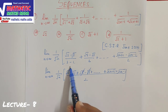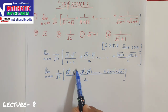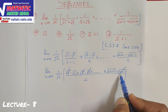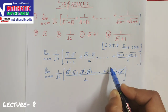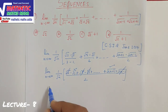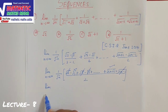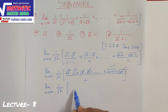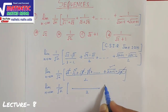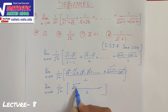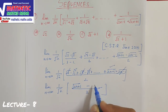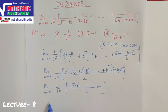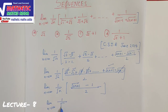After cancellation, only two terms remain. The expression becomes the limit as n tends to infinity of (1/√n) times (√(2n+1) − 1)/2. Now we take √n as a common factor from √(2n+1).